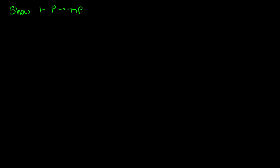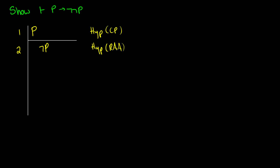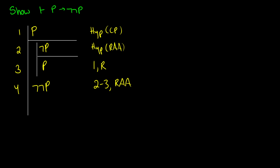Now let's prove P→¬¬P. I'll assume P for a CP proof — it's a conditional, so I need to assume P. Now I need to get ¬¬P, so in line 2 I'll assume ¬P for RAA — I want to get a contradiction. In line 3 I reiterate P from line 1. Now I have P and ¬P, so in line 4 I get ¬¬P by RAA from lines 2 to 3. So on line 5, from 1 to 4 by conditional proof, I can write P→¬¬P.